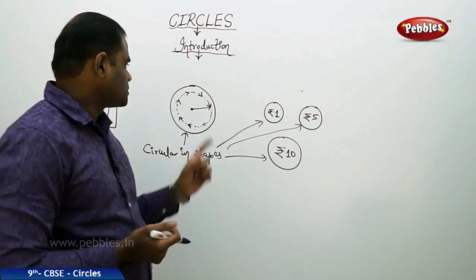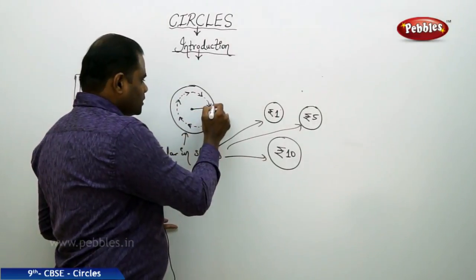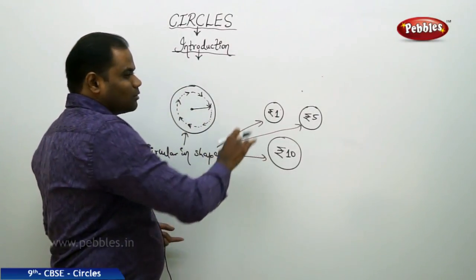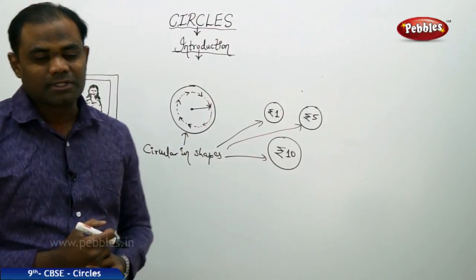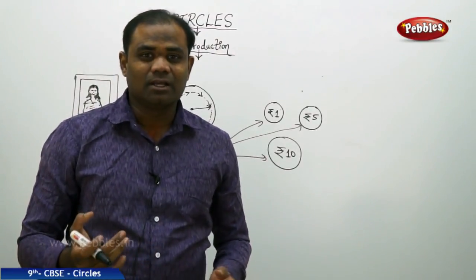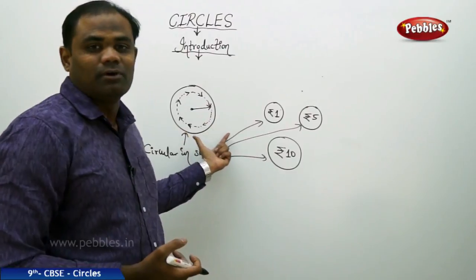So a circle is something which has fixed point and moves at constant distance throughout in all directions. Just like the seconds hand of a wall clock to take an example of.